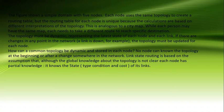No node can know the topology at the beginning or after a change somewhere in the network. Link state routing is based on the assumption that although global knowledge about the topology is not fully known, each node has partial knowledge — it knows the state of its own links.